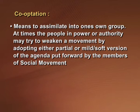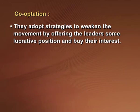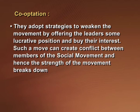The second logical end could be co-optation — assimilation into the opposing group. At times, people in power may try to weaken a movement by adopting a partial or mild version of the agenda put forward by members of the social movement. They may adopt strategies to weaken the movement by offering leaders lucrative positions to buy their interest. Such a move can create conflict between members of the social movement, and hence the strength of the movement may break down or it may die.